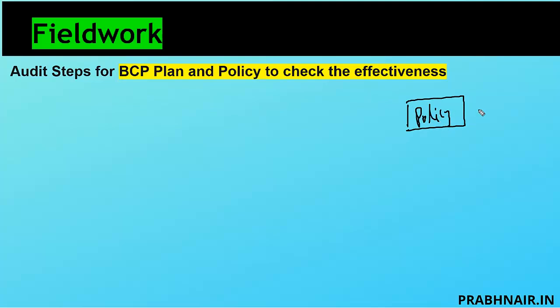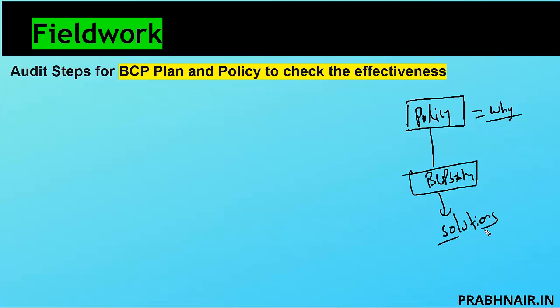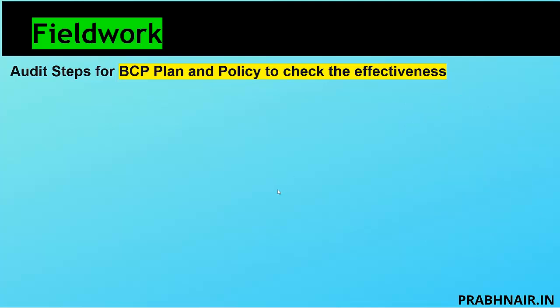We take policy as the first part, then based on the policy we have the BCP system, and the BCP system provides the solution. There is no point auditing the solution directly if we don't have visibility of the policy. It is very important to confirm that definitive roles are clearly outlined and that management properly and proactively monitors against such assigned responsibilities. We verify the policy and also check its effectiveness — sometimes a policy exists but is not signed by management, which is a medium risk.